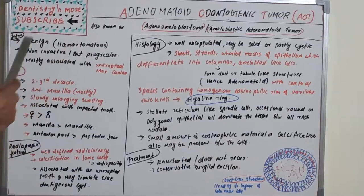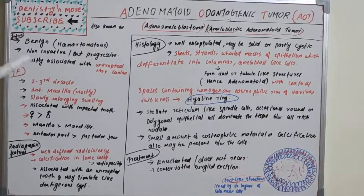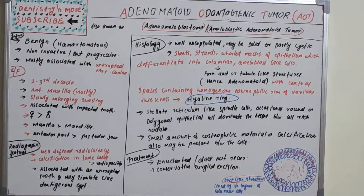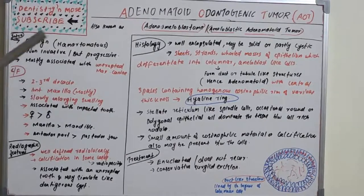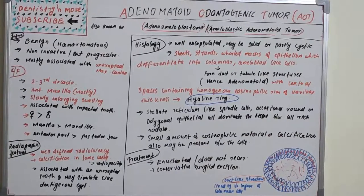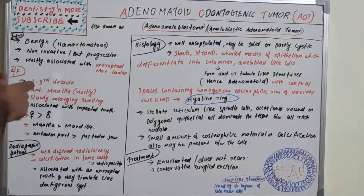Hamartomatous means a disorganized growth which is mimicking a neoplasm. The difference between a hamartoma and a benign neoplasm is the growth rate — there is no measurable growth rate in a hamartoma, whereas a benign tumor has a measurable growth rate. It is composed of tissues of its own origin.